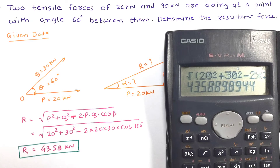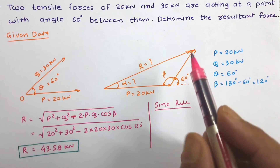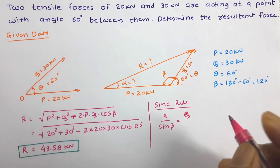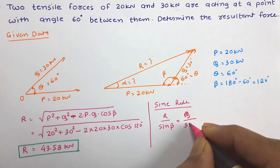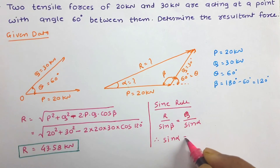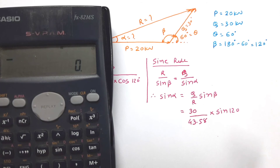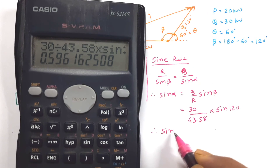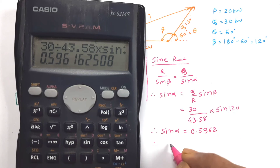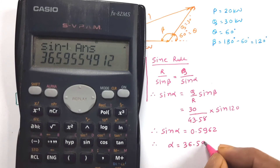Now let us use the sine rule to determine the angle. According to the sine rule: R / sin(beta) = Q / sin(alpha). So sin(alpha) = Q · sin(beta) / R. Substituting the values of Q and R, we get sin(alpha) = 0.5962. From that, the value of alpha = 36.59°. So the magnitude and direction of the resultant are R = 43.58 kN and alpha = 36.59°.